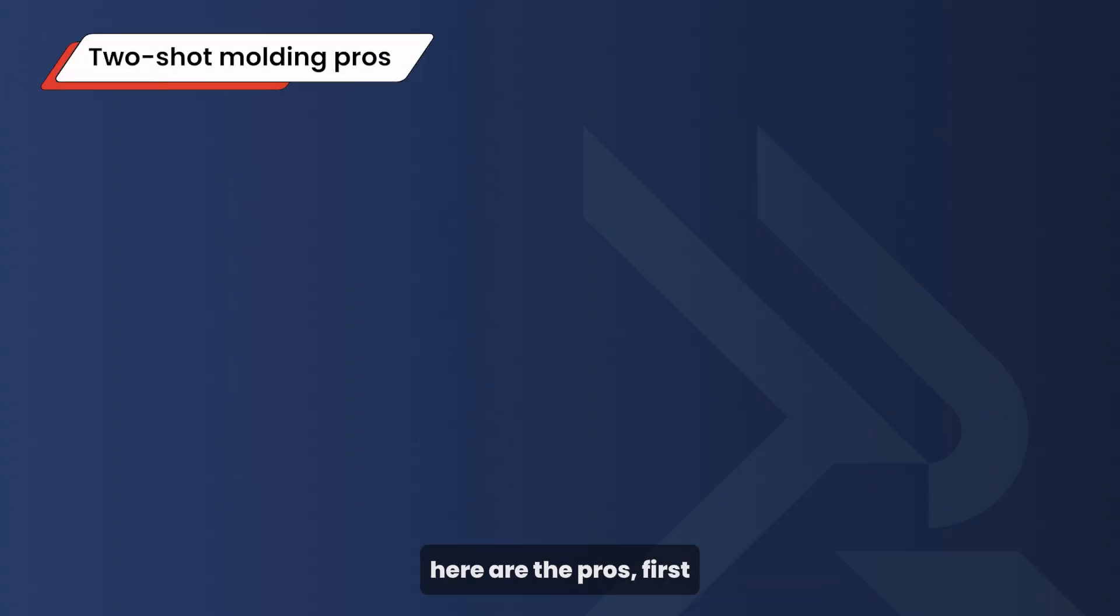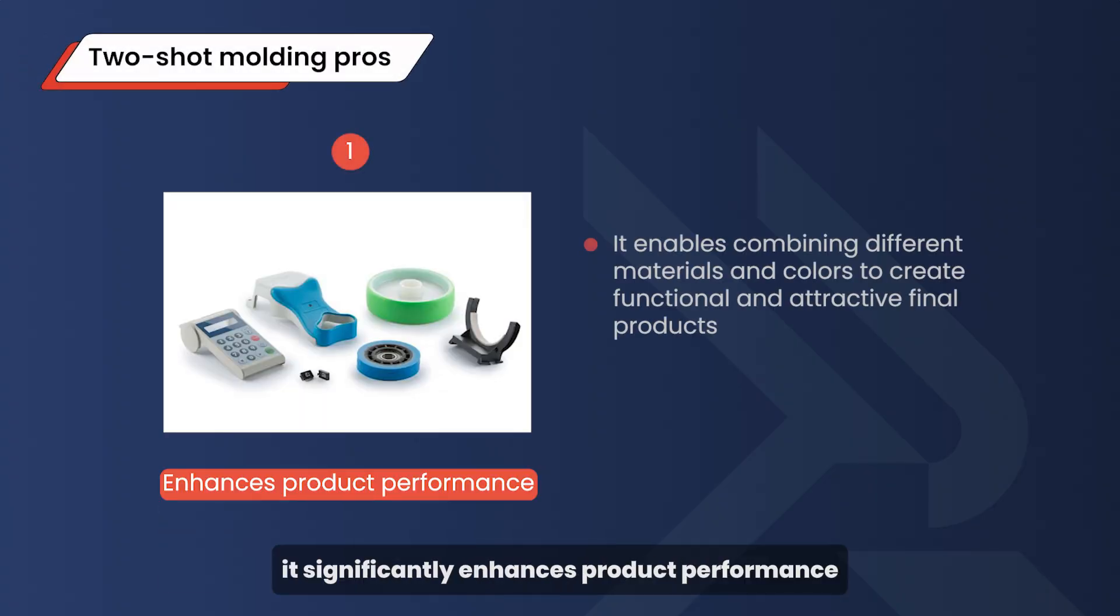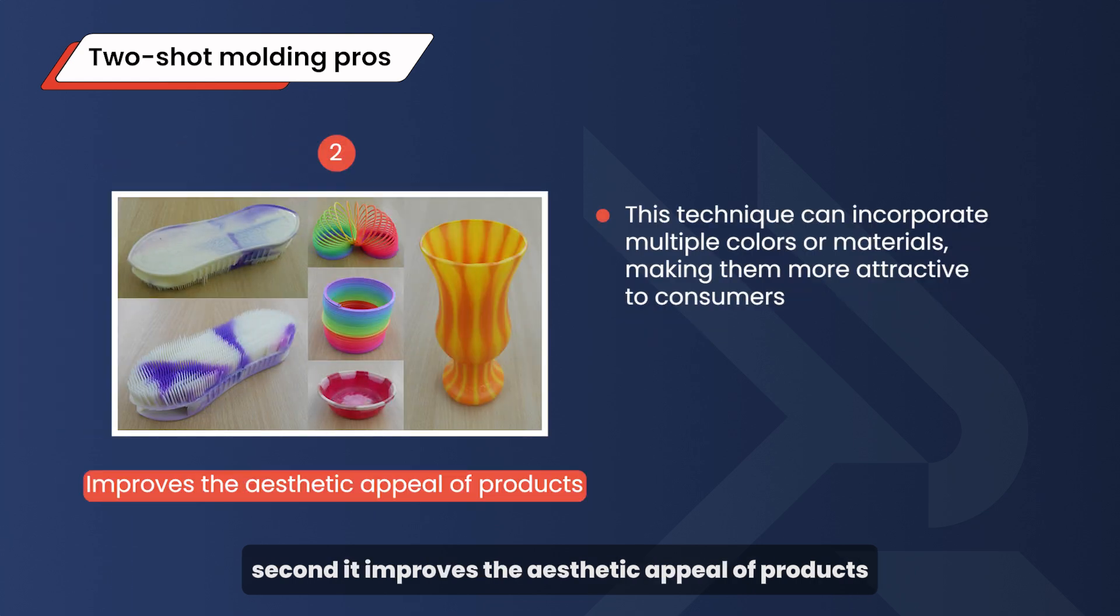Starting with two-shot molding, here are the pros. First, it significantly enhances product performance. It enables combining different materials and colors to create functional and attractive final products. Second, it improves the aesthetic appeal of products. This technique can incorporate multiple colors or materials, making them more attractive to consumers.